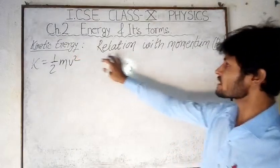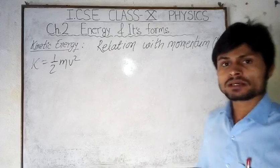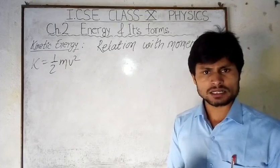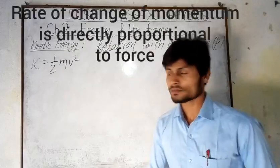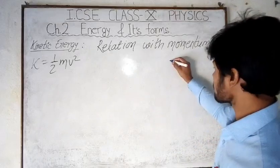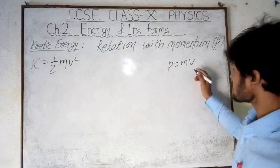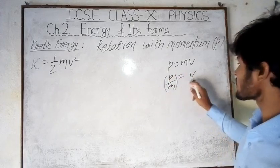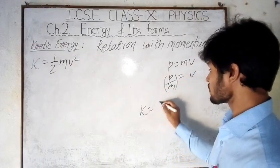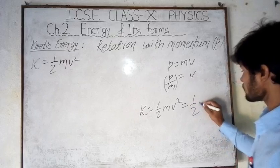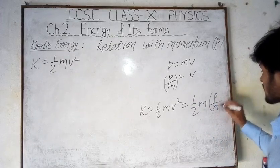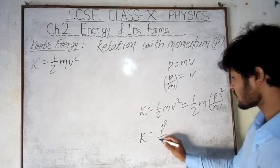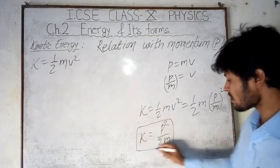Now we will know how kinetic energy K is related to momentum p. If any object is in motion, it has momentum — the product of mass and velocity. From the second law of motion, p = mv, so v = p/m. We substitute this into K = ½mv²: K = ½m(p/m)² = p²/2m. This is the relation between momentum and kinetic energy.